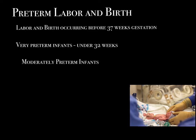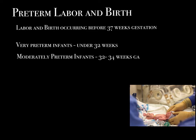After very preterm infants, we have moderately preterm infants — babies somewhere between 32 and 34 weeks gestational age. These babies are still quite at risk. They're small. They have trouble maintaining their blood sugar and body temperature. They usually aren't particularly good feeders — they tucker out — and they use a lot of oxygen to do things that a term baby does almost effortlessly.